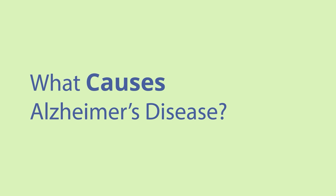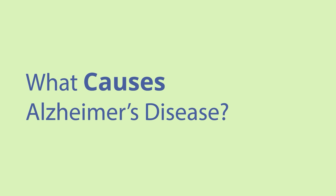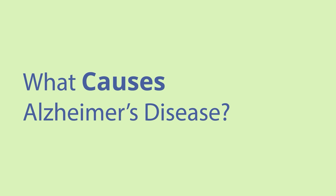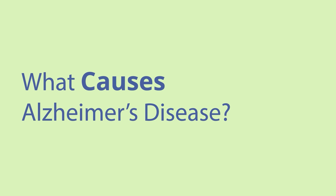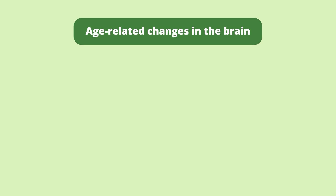What causes Alzheimer's disease? Scientists are still working to understand what causes Alzheimer's disease. Research suggests the following may play a role: age-related changes in the brain, including shrinking of certain areas, inflammation, damage to blood vessels, and changes to how energy is produced in brain cells.